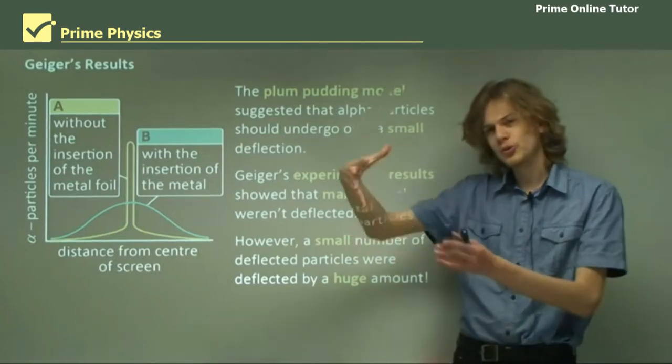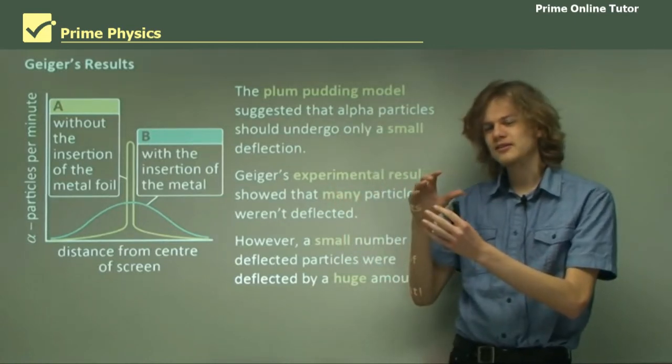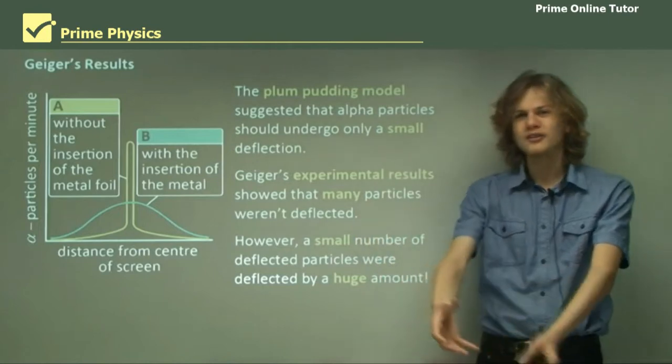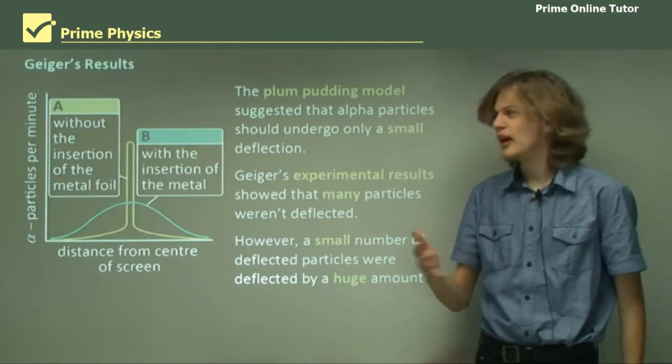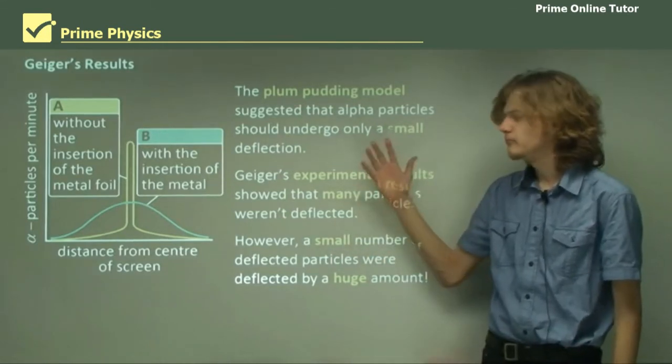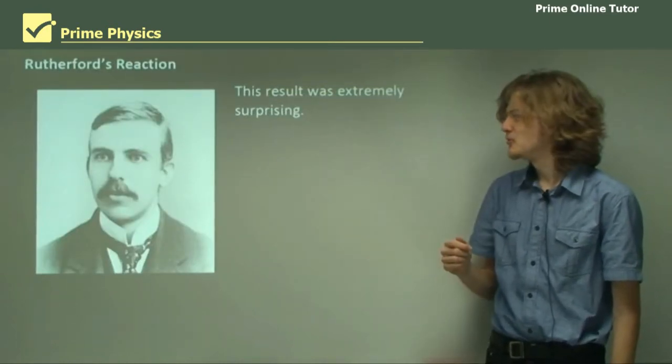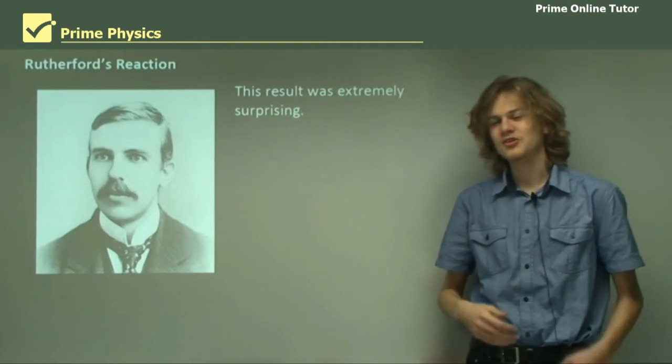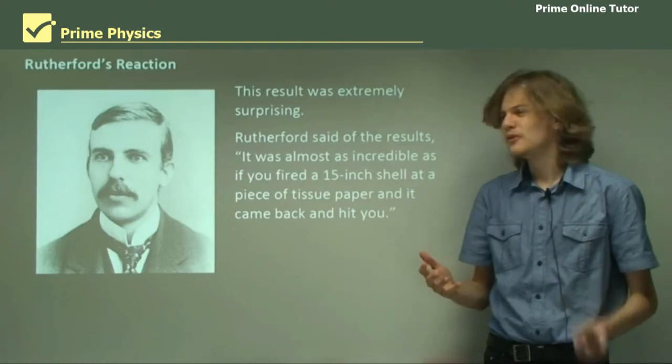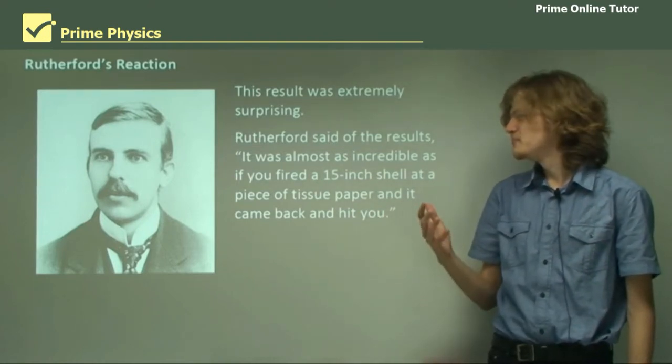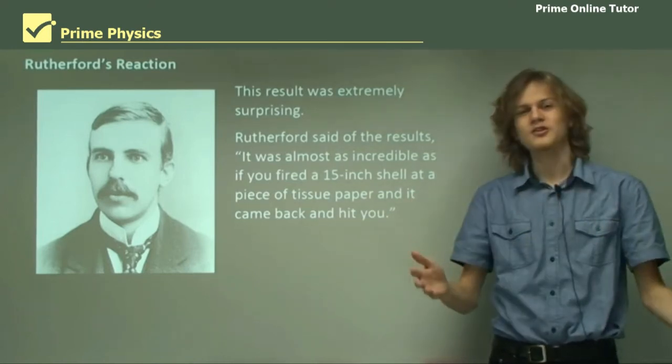But a small number were deflected by huge amounts. In fact, when Rutherford moved the screen around, or maybe it was Geiger or Marsden, when they moved the screen around in the apparatus, they noticed that some of the alpha particles were almost bouncing backwards the way they came, which is something you would never expect to happen for the Plum Pudding model. So, the result was extremely surprising. We have a surprise picture of Rutherford over here.